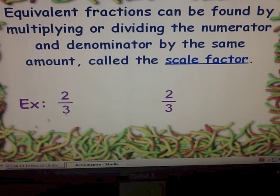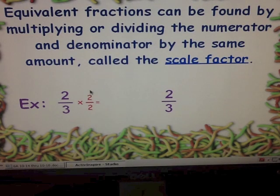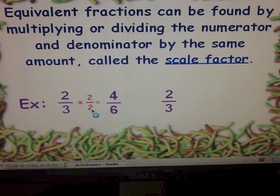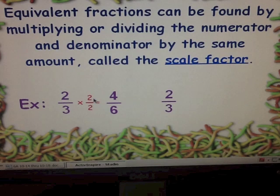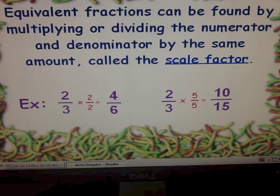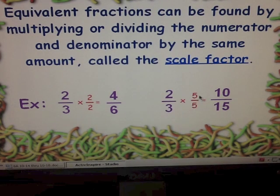This amount is called the scale factor. For example, with two-thirds, I can find an equivalent fraction by multiplying both the numerator and the denominator by two, and I get four-sixths. Notice that two over two actually equals one whole — I have to multiply both numerator and denominator by the same number. I can also multiply both by five and get ten-fifteenths. It doesn't matter what scale factor I use, as long as I multiply both the numerator and the denominator by the same number.